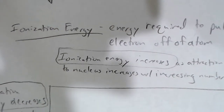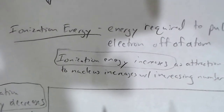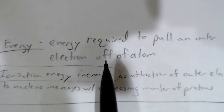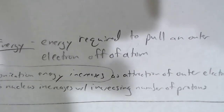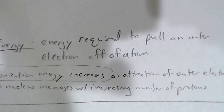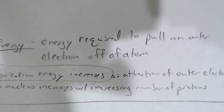We also have trends in ionization energy. Ionization energy is the energy required to pull an electron off of an atom. Electrons are attracted to the nuclei — electrons are negative, and nuclei have positive protons — so it is hard to pull electrons off of the atom. It takes energy, and that energy is ionization energy: the energy to pull an electron off and create an ion.